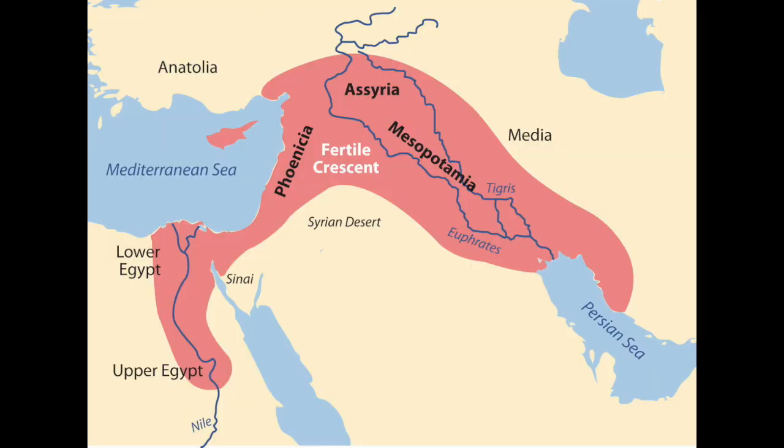The first important hearth was Southwest Asia. This eventually diffused into North Africa, Southern Europe, and Central Asia. More than about 10,000 years ago, people settled down and started growing barley, wheat, oats, rye, and even olives.